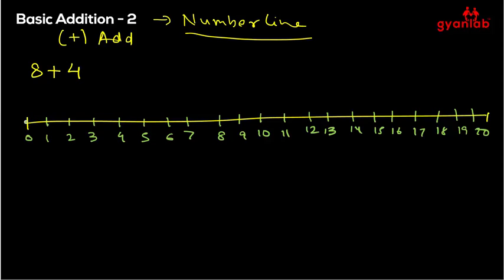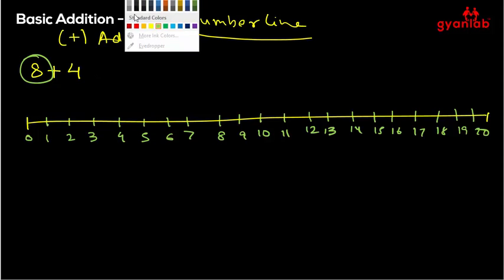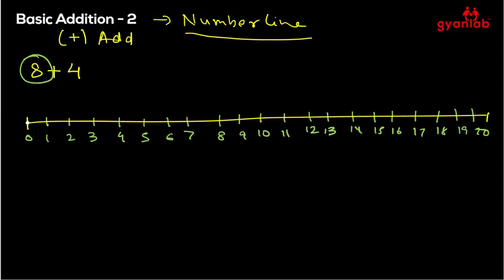So we have a number line here and if I take my first number, that's 8, right? So I have to put 8 on this number line to add these numbers. So let's just keep jumping till 8: 1 and 2 and 3 and 4, 5, 6, 7, 8.